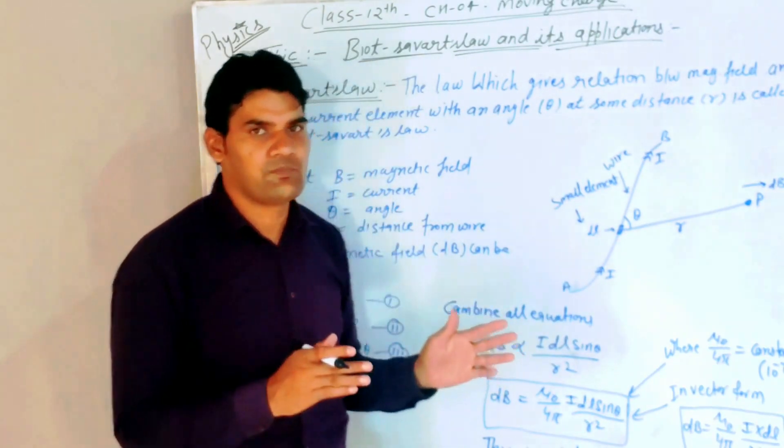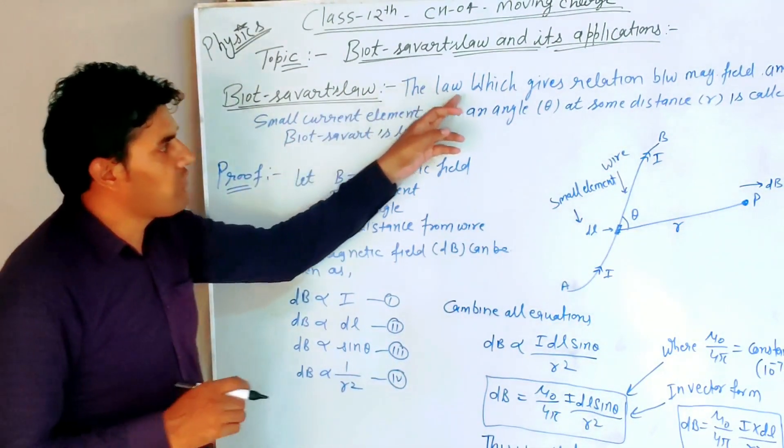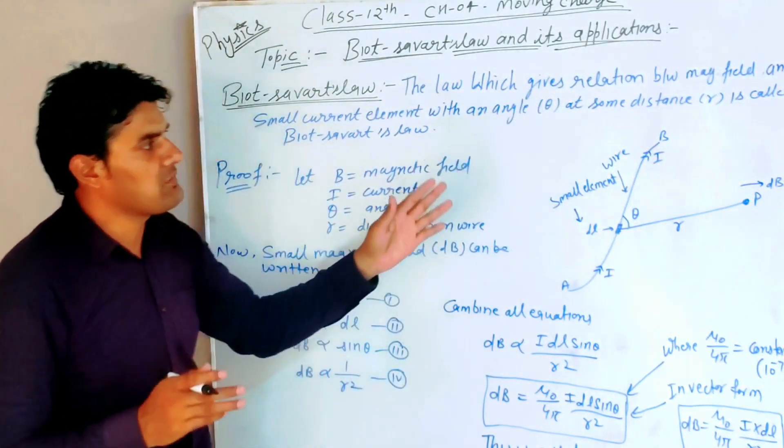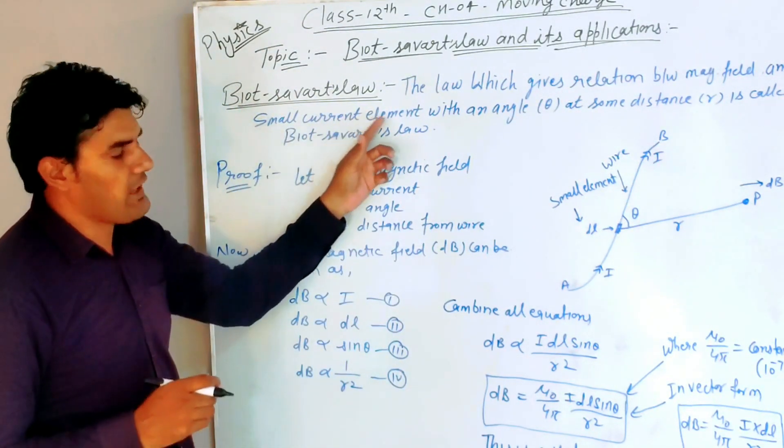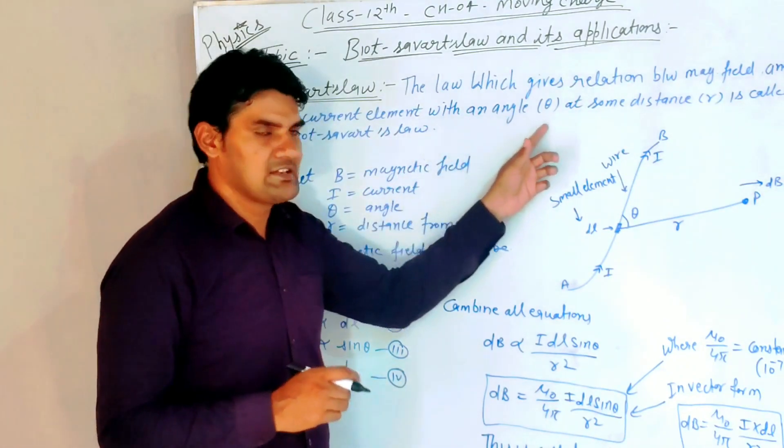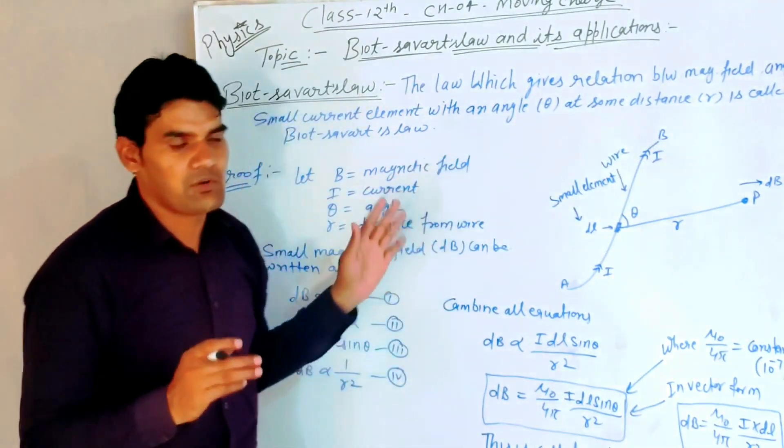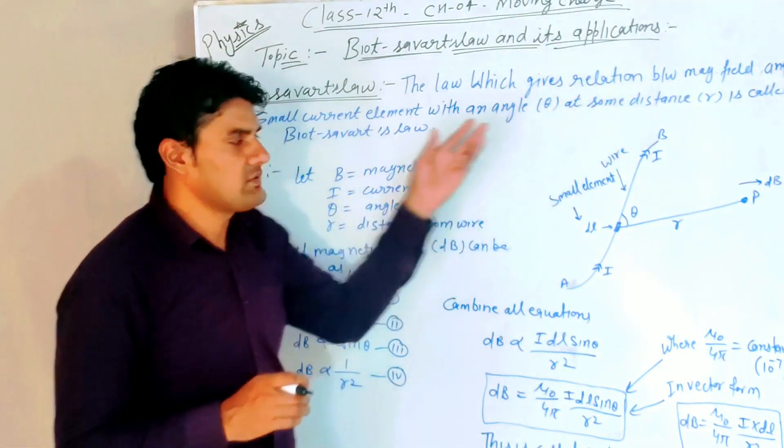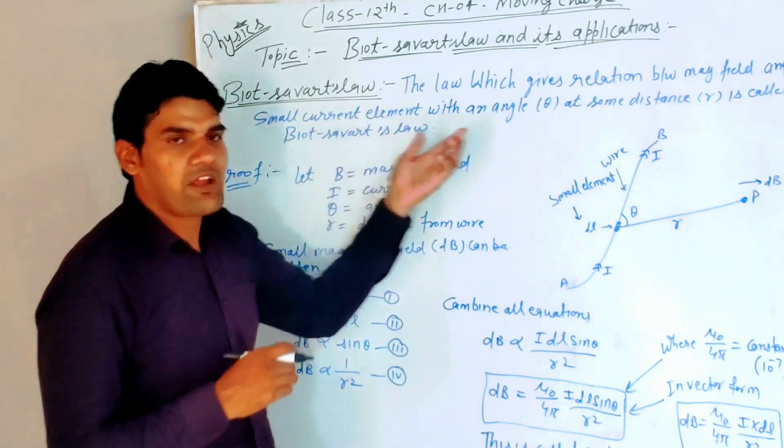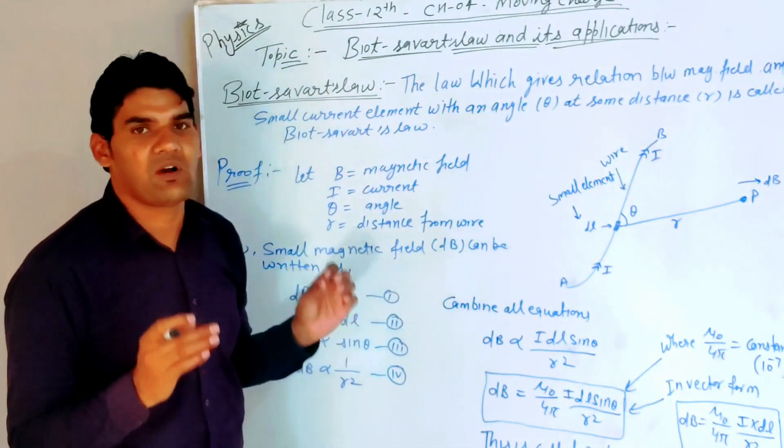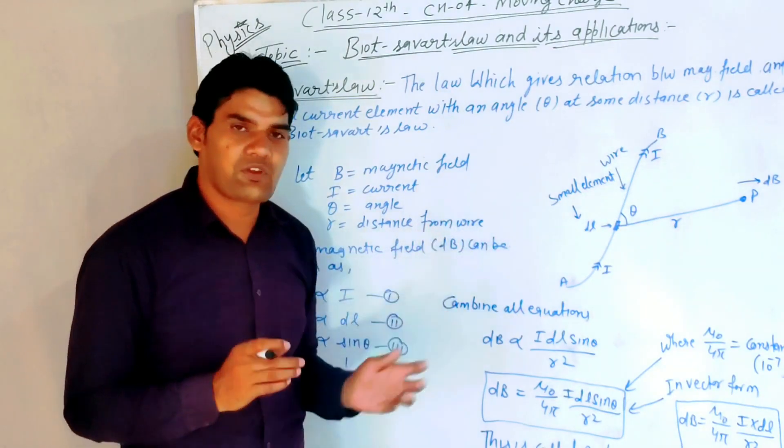So what is the Biot-Savart law? Definition: The law which gives the relation between magnetic field and small current element with an angle theta at some distance r is called Biot-Savart law. This law relates magnetic field, current element, angle, and distance r. Let's prove this.